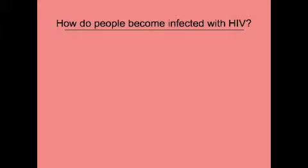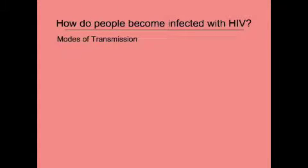How do people become infected with HIV? HIV cannot thrive outside the body, which means you cannot contract HIV by hugging, shaking hands, sharing food, or even casual kissing.